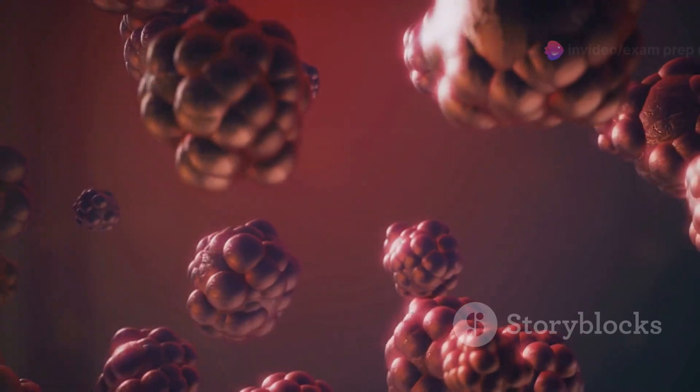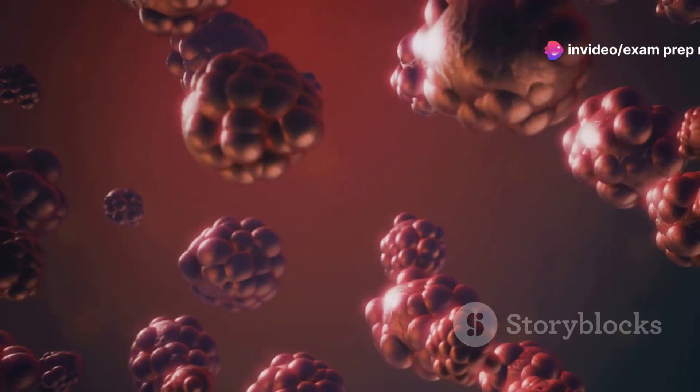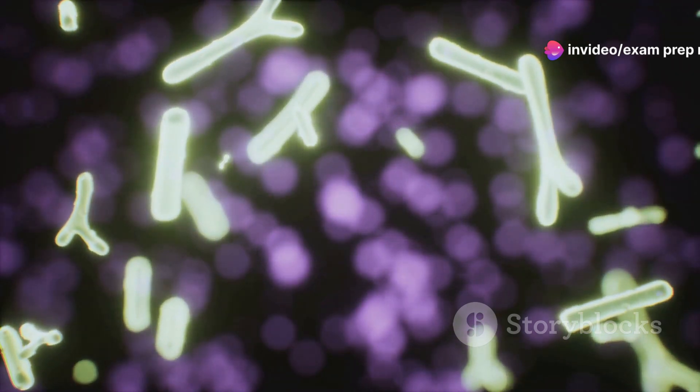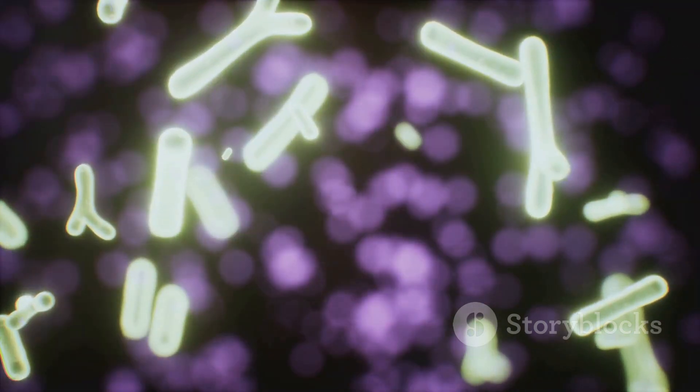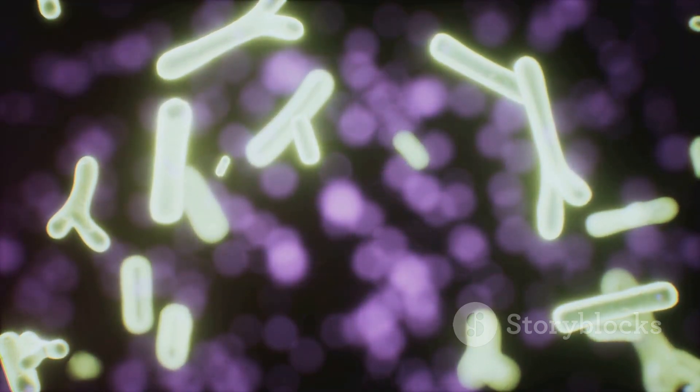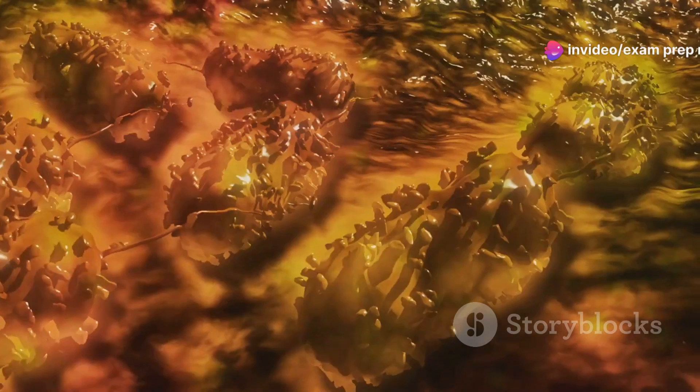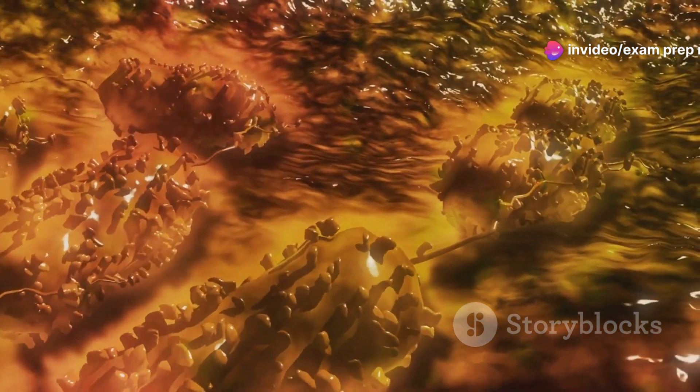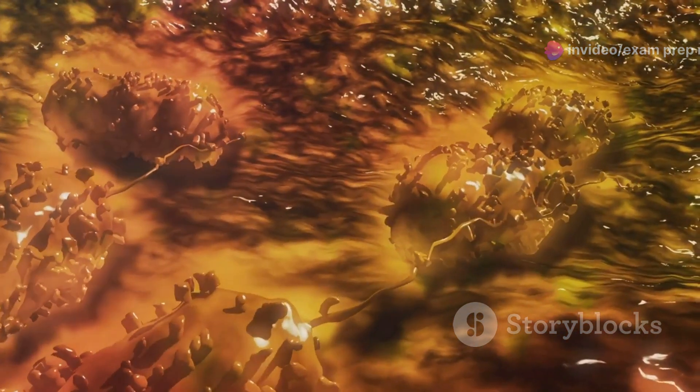Section 7, Mycoplasma, the shape-shifting bacteria. Get ready to meet Mycoplasma, the bacterial rebels that defy convention. These tiny bacteria lack a cell wall, giving them a unique ability to change their shape and squeeze through spaces other bacteria can't. Without a rigid cell wall, Mycoplasma are incredibly flexible and can take on a variety of forms, from spherical to filamentous.